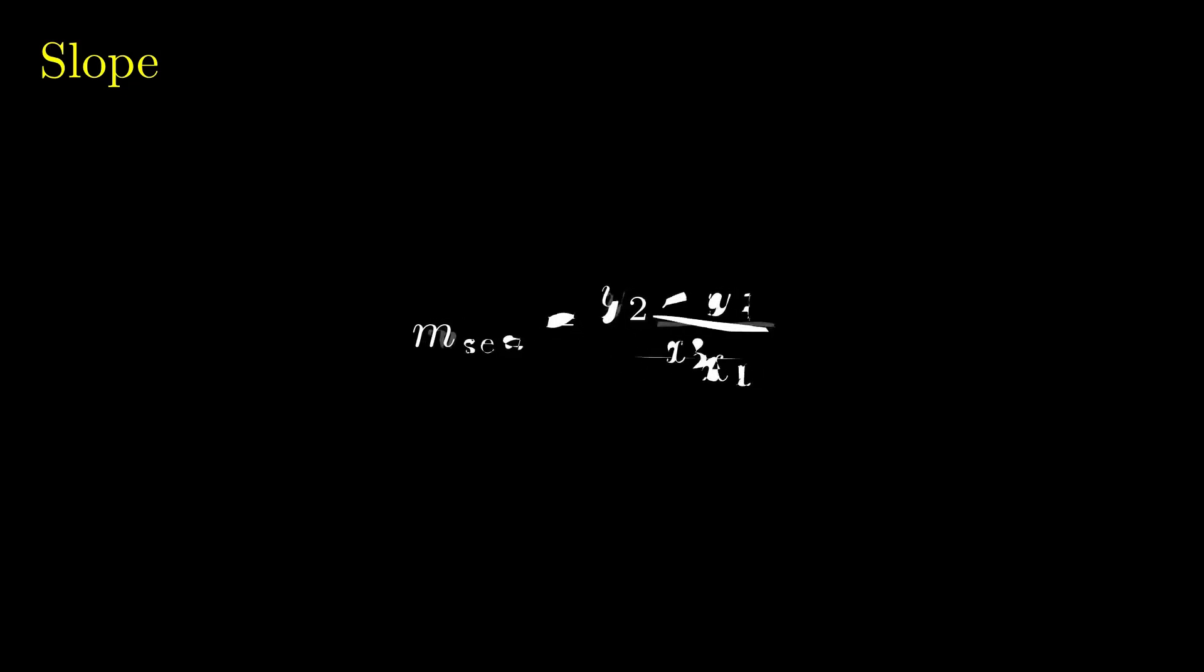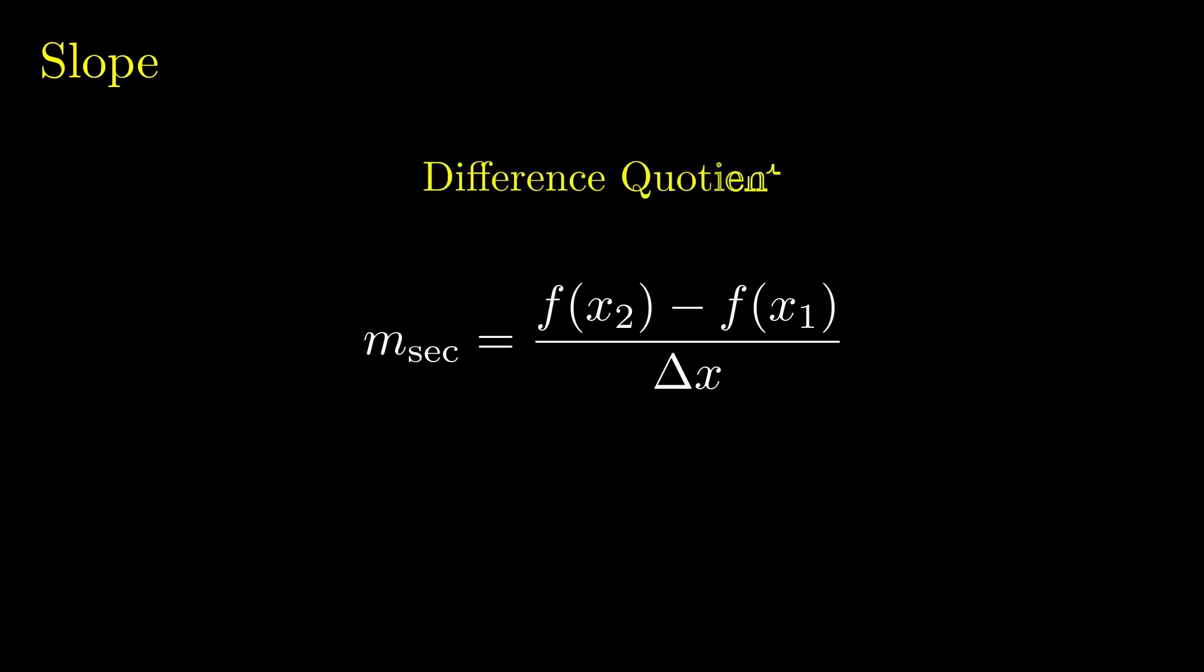If we represent y as a function of its x coordinates and the change in x as delta x, what we obtain is our difference quotient. We can interpret the difference quotient as the average rate of a function between two points.